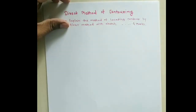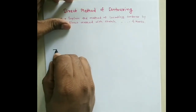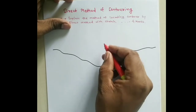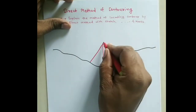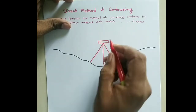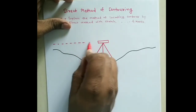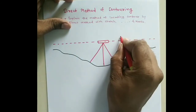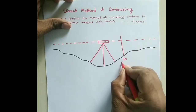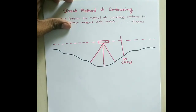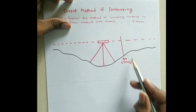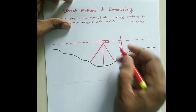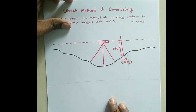Now let me show the procedure on a ground diagram. I set up the instrument — the level — here on the ground, which gives a horizontal line of sight. I have considered one benchmark here, having a value of 100 meters, meaning its reduced level from a particular datum is 100 meters. If the staff reading at the benchmark is 2.58 meters, then we need to find the height of instrument.